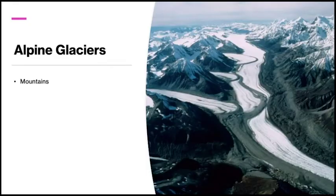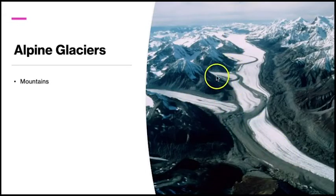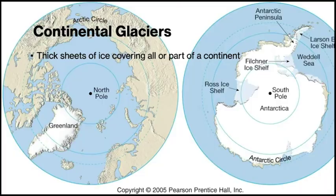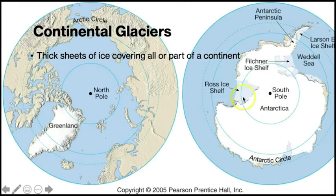Alpine glaciers, also called valley glaciers, are so named because they are found in alpine settings — alpine being another word for mountains. The name valley glacier is also appropriate because they are contained within valleys in the mountains. Continental glaciers are not contained in a single valley, but instead cover all or part of a continent. Today there are two continental glaciers: one covering most of Greenland and the other covering Antarctica.